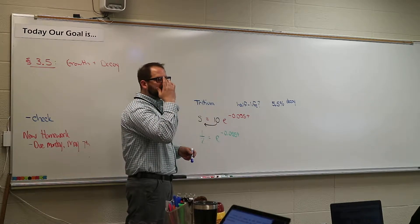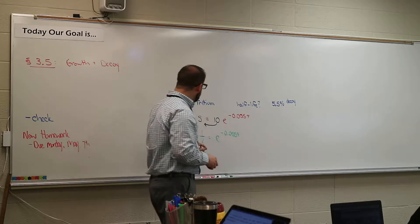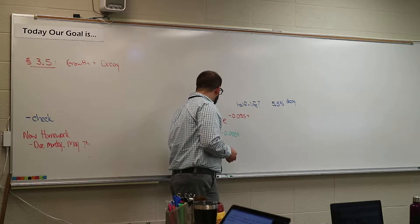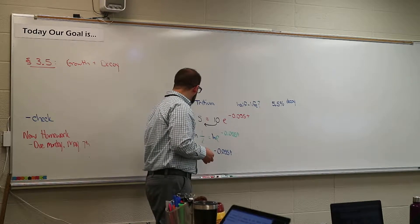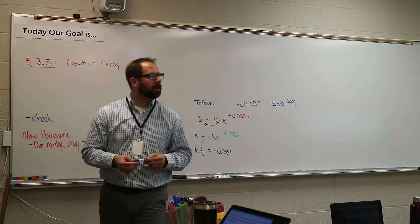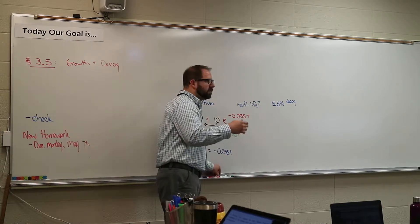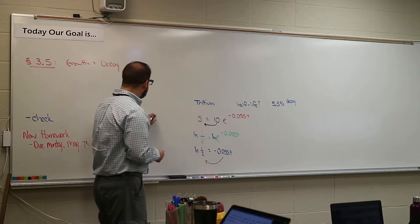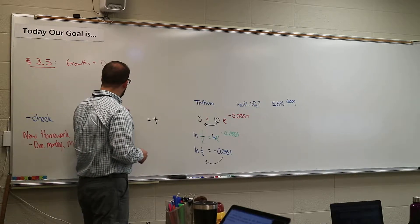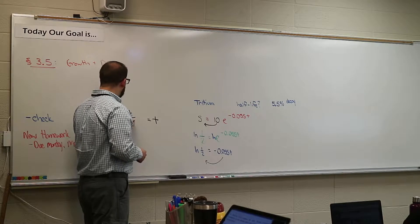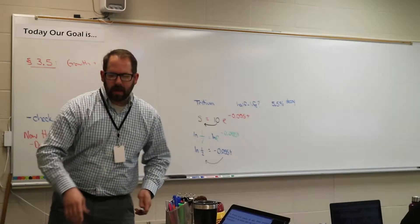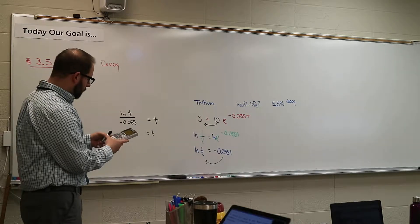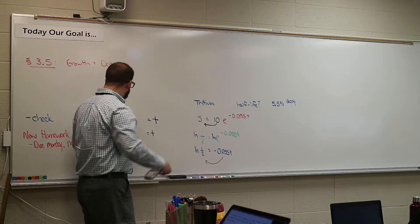Now we take the natural log of both sides. The natural log drops the exponent out front, giving us: natural log of one-half equals negative 0.055 t. Last step is to divide by negative 0.055, and that gives you t. Typing that in — natural log of one-half divided by negative 0.055 — we get 12.6 years. That's the half-life.